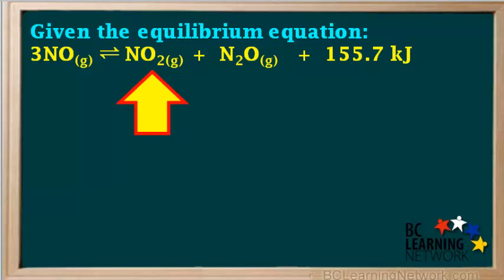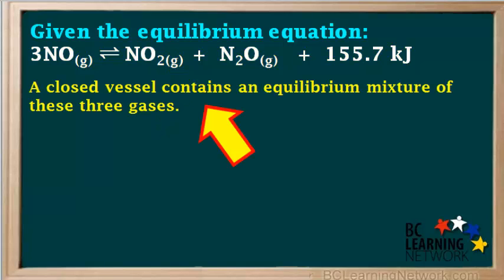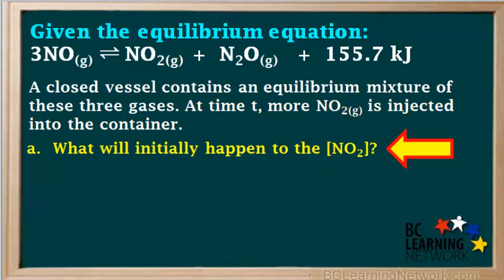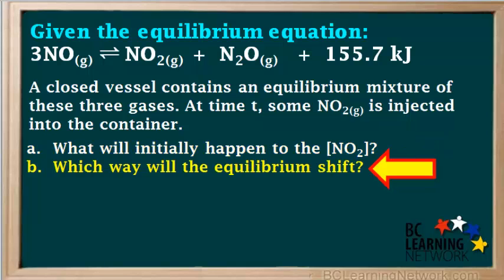Given this equilibrium equation, a closed vessel contains an equilibrium mixture of the three gases NO, NO₂, and N₂O. At time T, more NO₂ is injected into the container. We're asked what initially happens to the concentration of NO₂, and we're asked which way the equilibrium will shift.